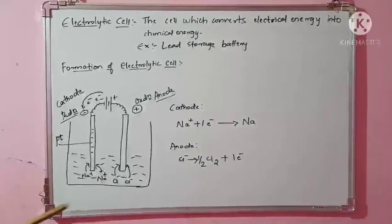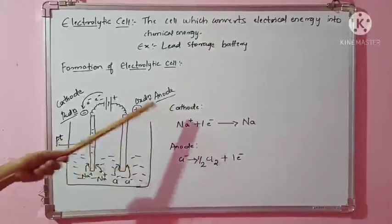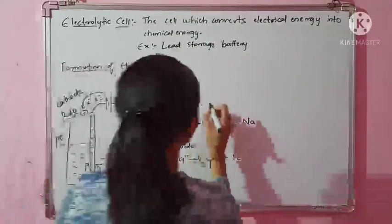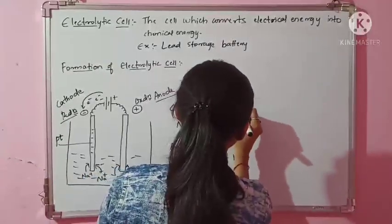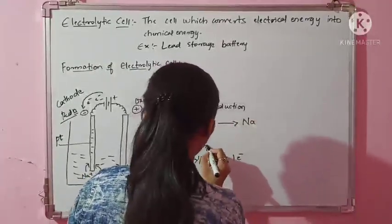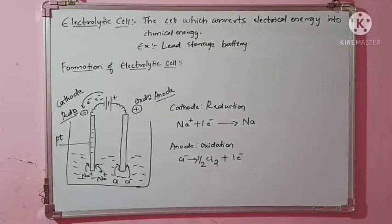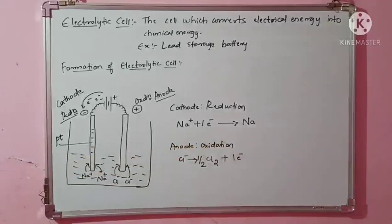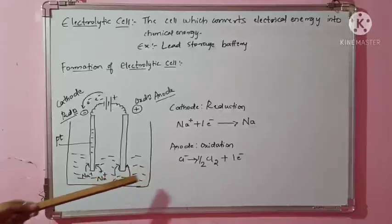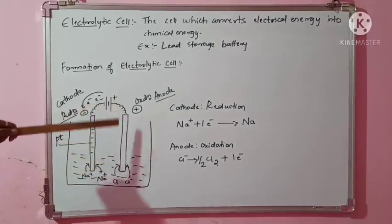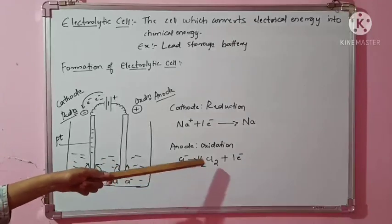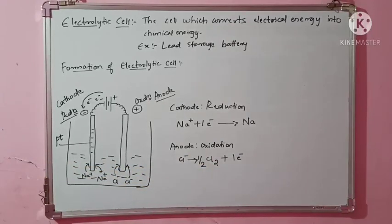At the cathode, reduction takes place: Na+ takes an electron and gets deposited as sodium metal. At the anode, oxidation takes place: Cl− loses an electron to form half Cl₂ gas. Remember — cathode means reduction, anode means oxidation.